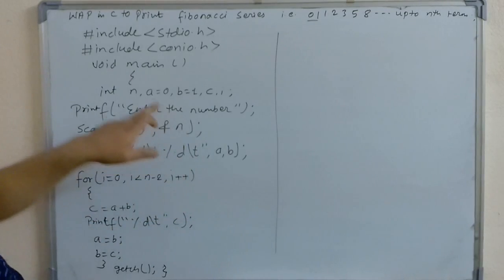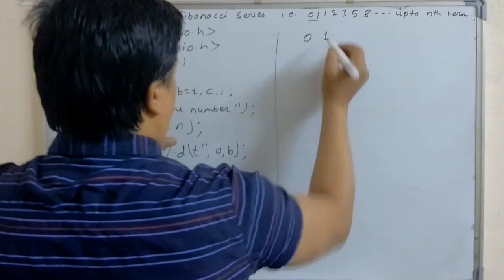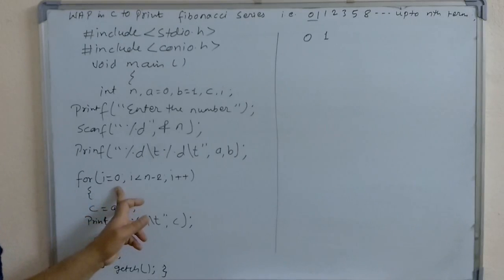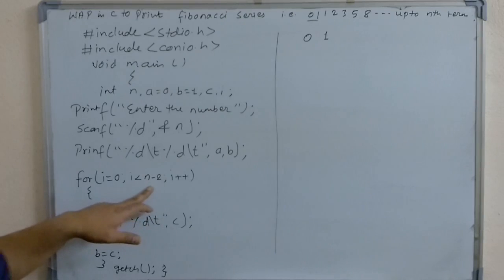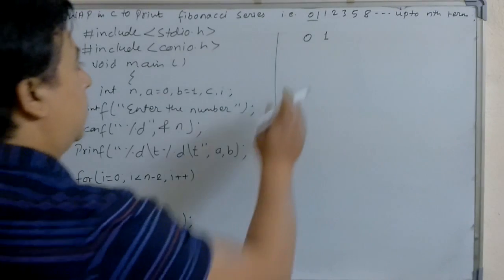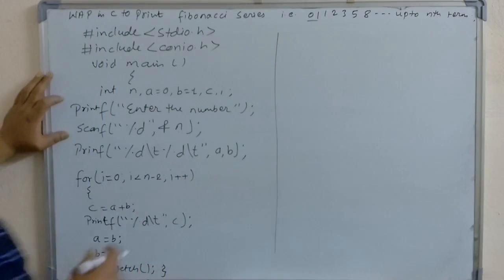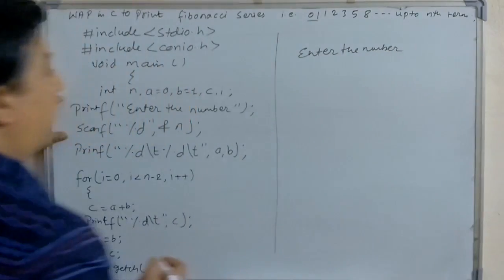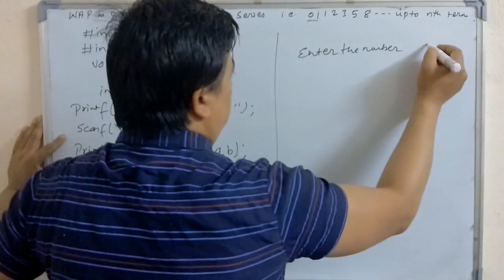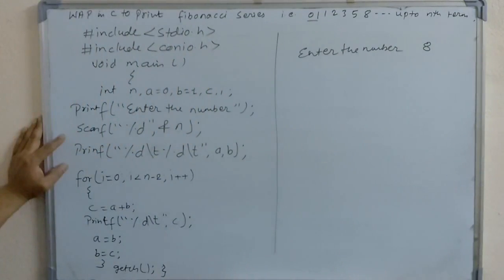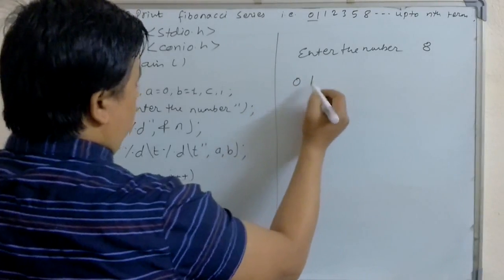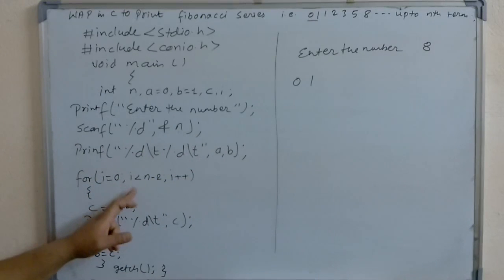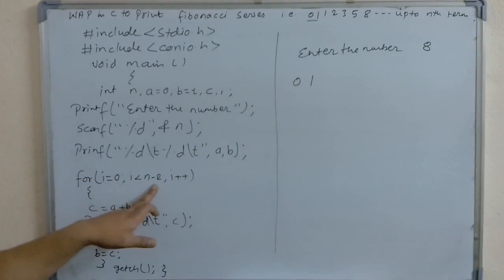When the program runs, first it prints a and b — the value of a is 0 and b is 1. After that it enters the loop. i is equal to 0, and the condition i less than n minus 2 is checked. Suppose you enter 8 — the program asks how many numbers you want to print, and when you enter 8, it first prints 0 and 1.